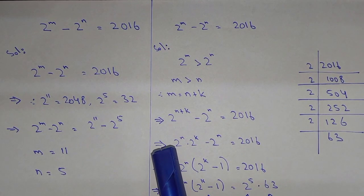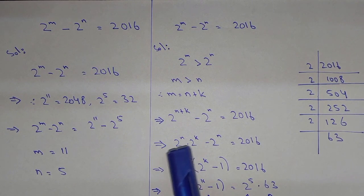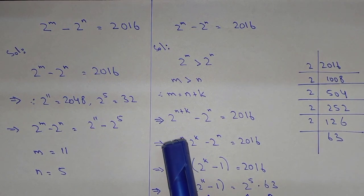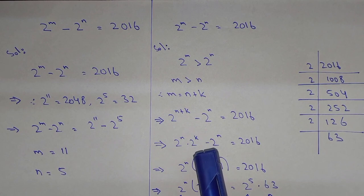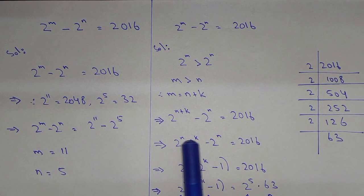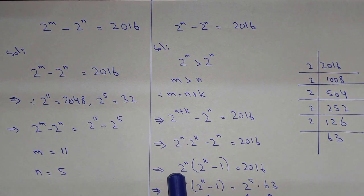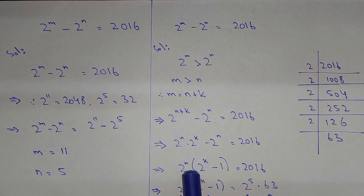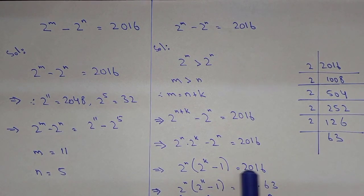We can write 2 power n plus k as 2 power n into 2 power k, because when the bases are the same the powers can be added. So 2 power n times 2 power k minus 2 power n equals 2016. Taking 2 power n common, we get 2 power n times the bracket 2 power k minus 1, equals 2016.